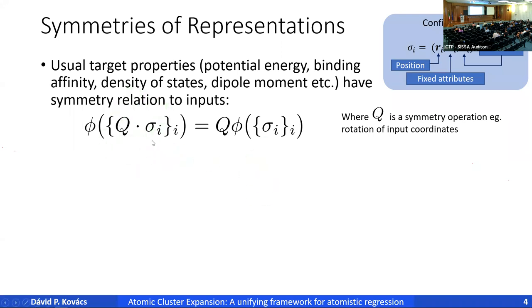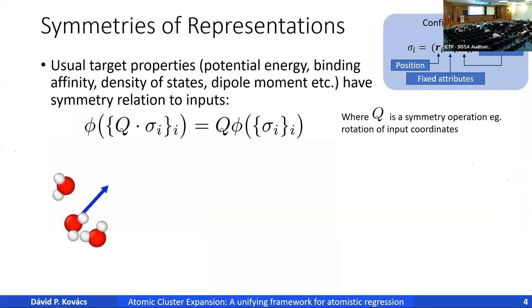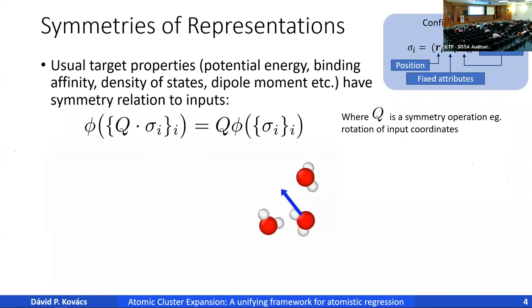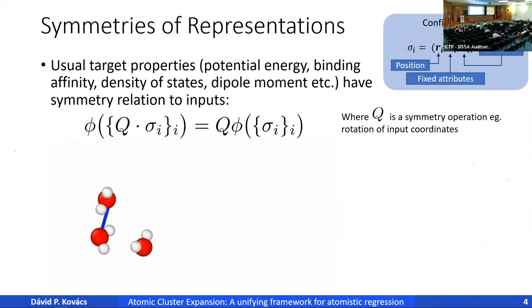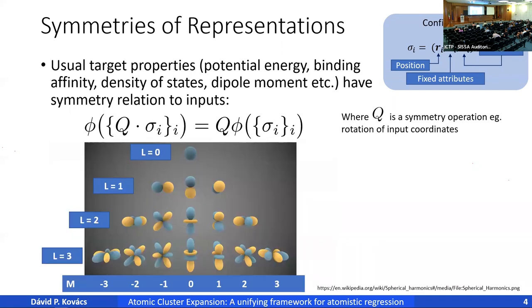Any property with a symmetry obeys a symmetry relationship. If you have a model phi and apply transformation Q to your inputs, an equivariant model means you could have made the prediction on the original system and then applied the transformation. If the model is invariant, transforming coordinates and computing energy is the same as computing energy and then transforming. For equivariant vector outputs, predicting the vector on the transformed system equals predicting on the original and then transforming.